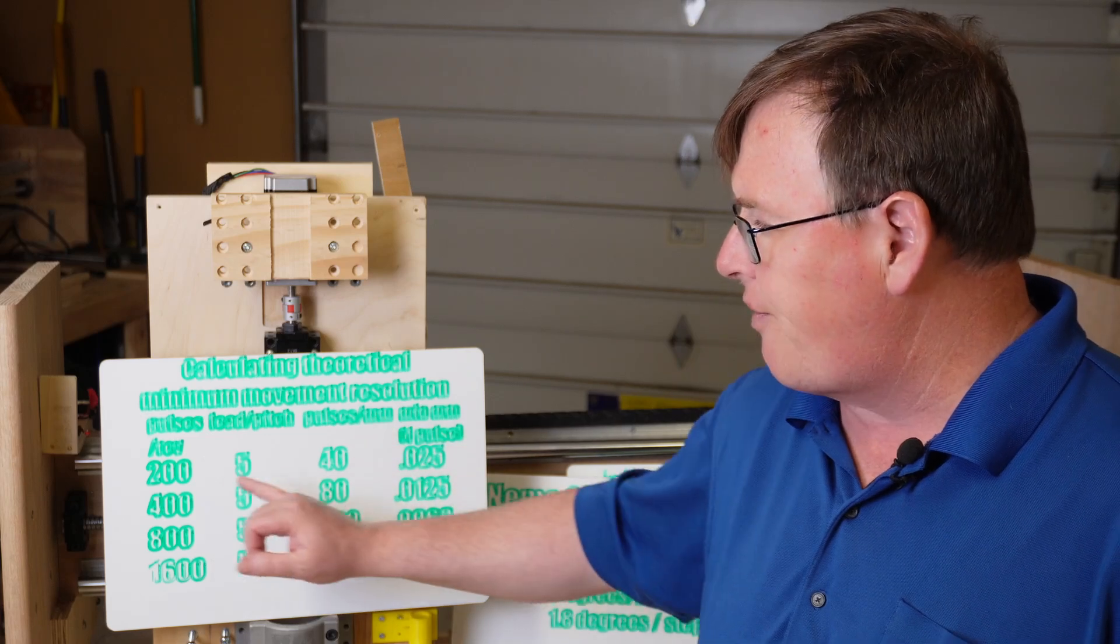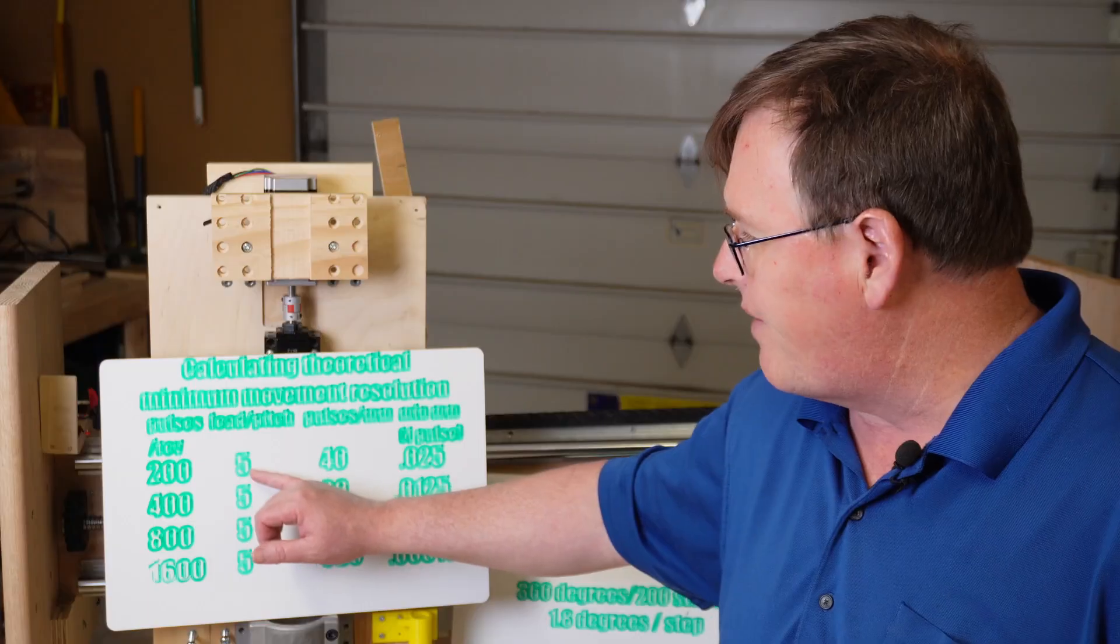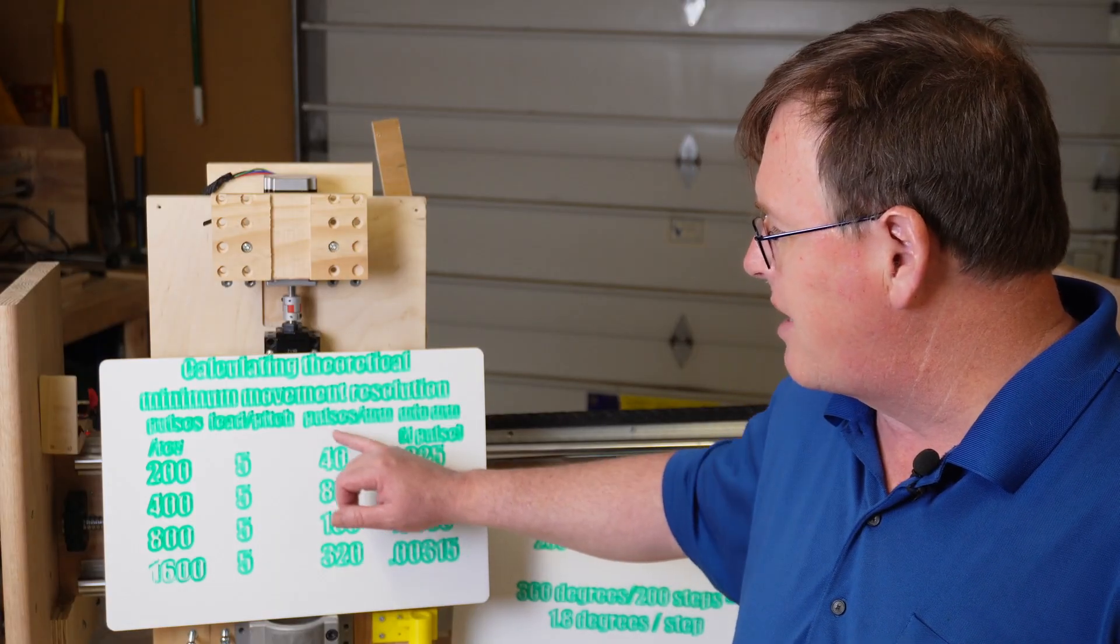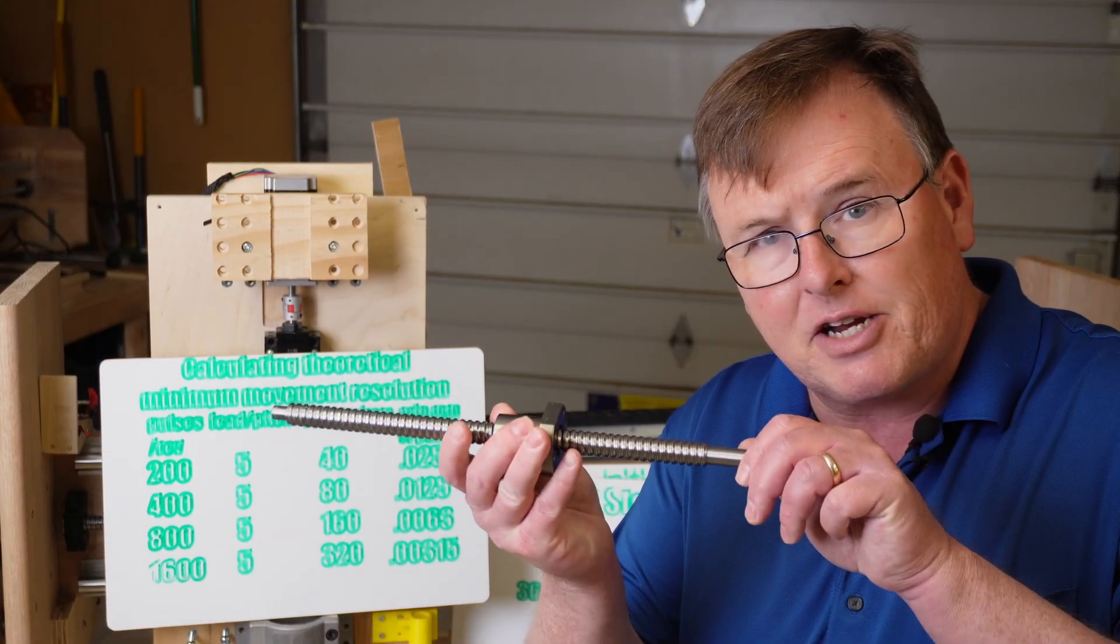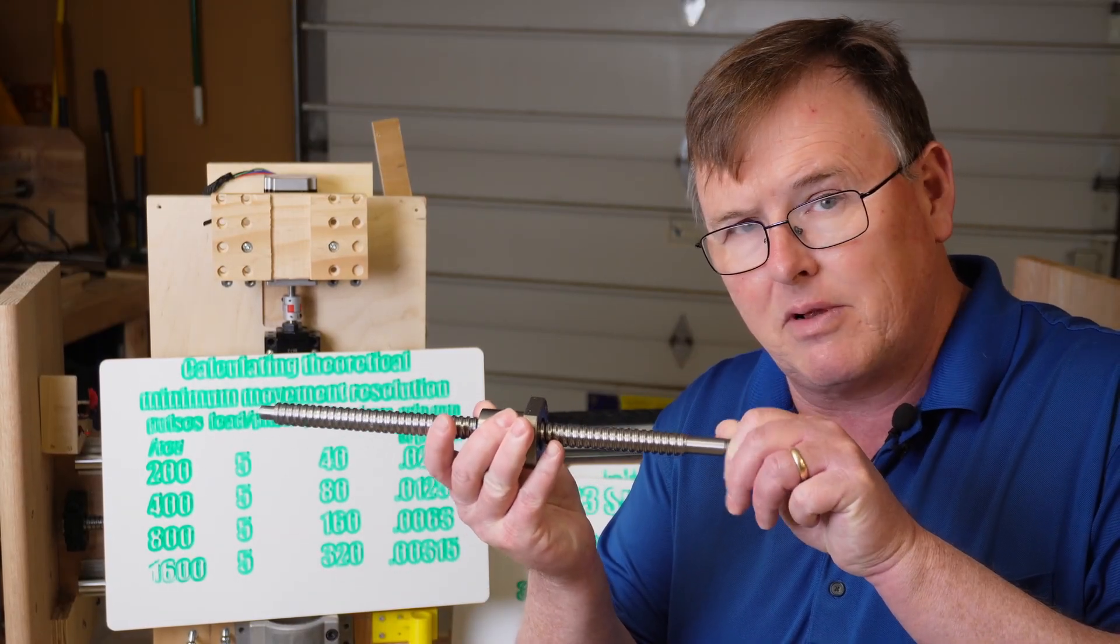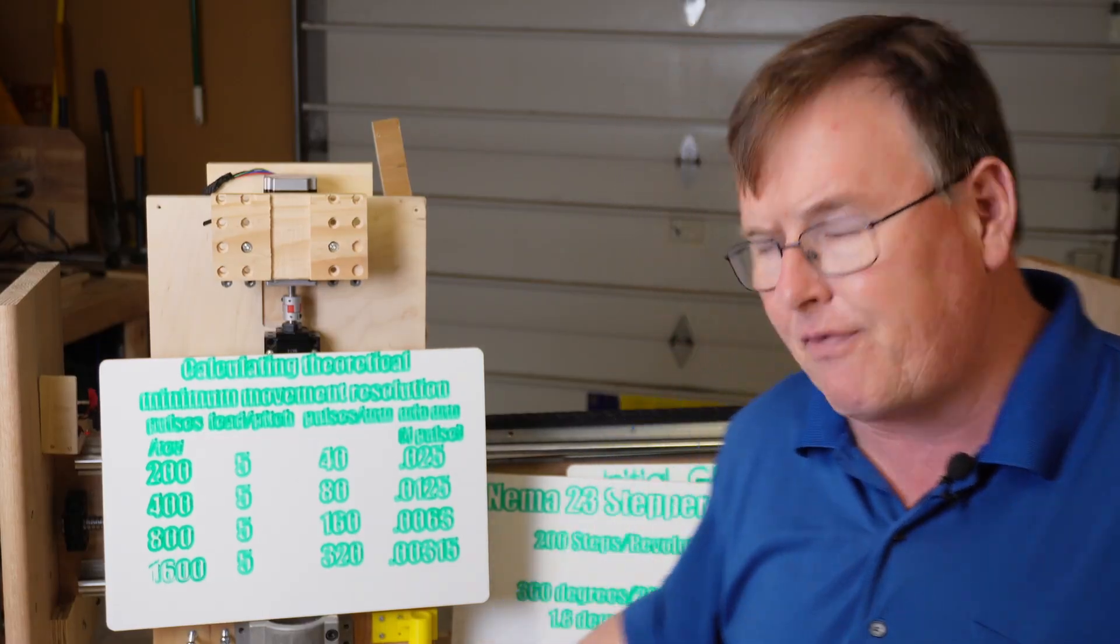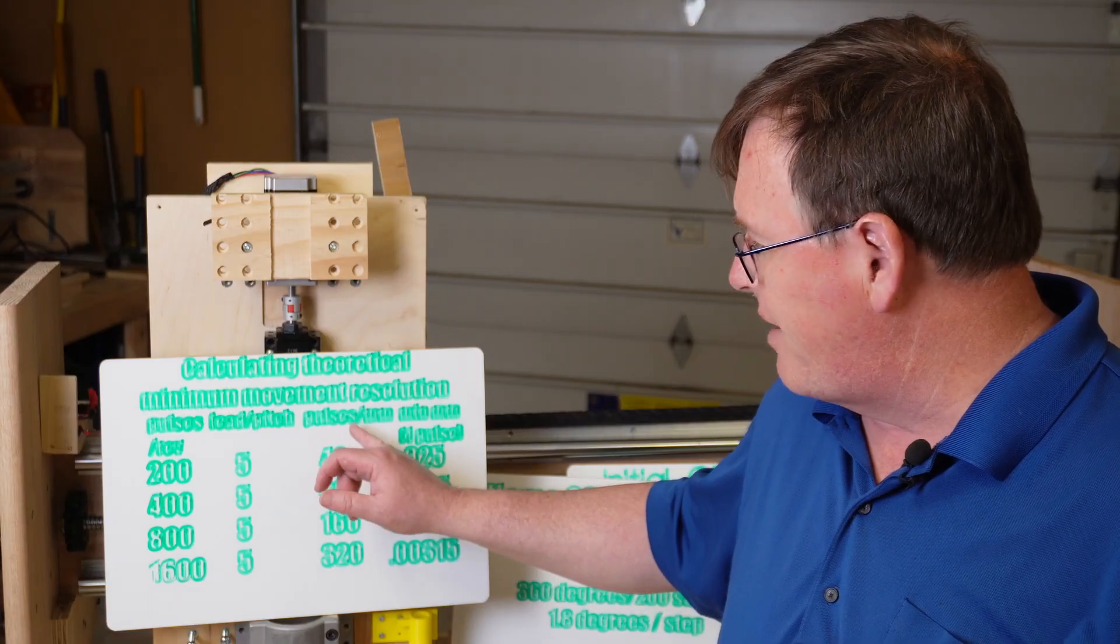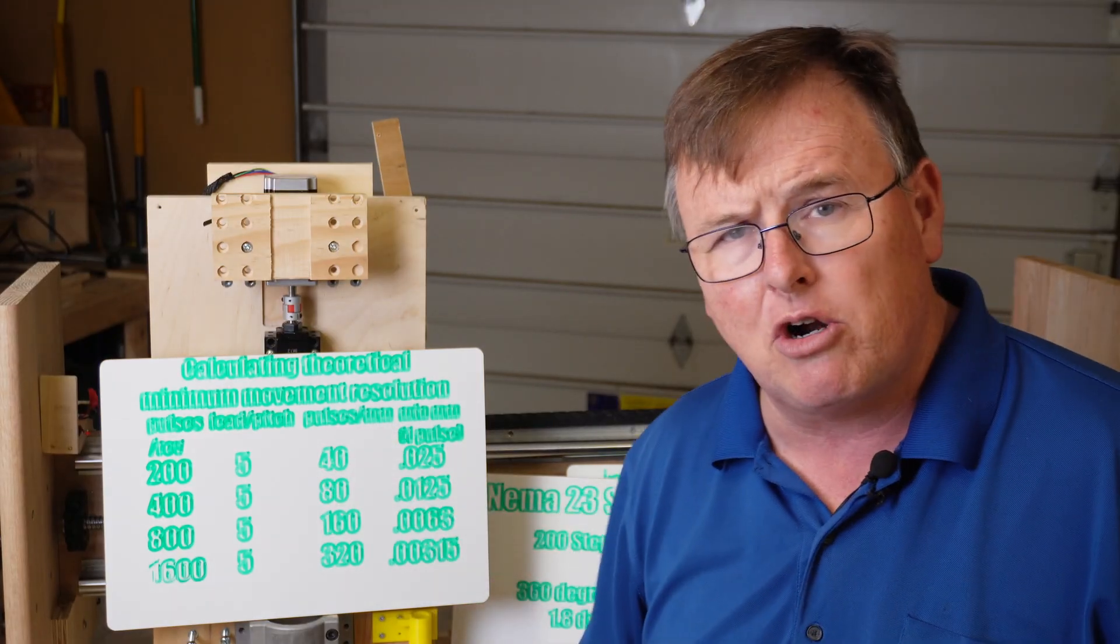If you do a little math, if we take the pulses per revolution that's coming off our stepper motor driver and divide by the lead or pitch that we have, we would find that 40 pulses will move this particular housing of this ball screw 1mm. That means that if we do a little bit more math, which if we take 40 and divide it into 1mm, so 1mm divided by 40, we get 0.025.